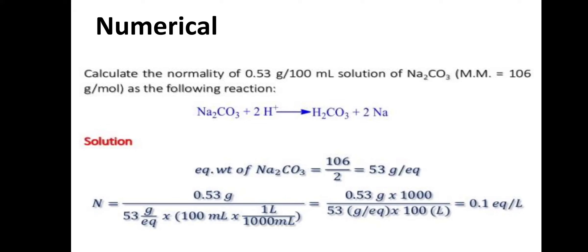An important relation: normality = molarity × basicity of acid, or normality = molarity × acidity of base. Here basicity is 2, normality is 0.1 N, so molarity = 0.1 / 2 = 0.05 mol/L. You can easily convert between normality and molarity if you know one value and the acid or base is specified.